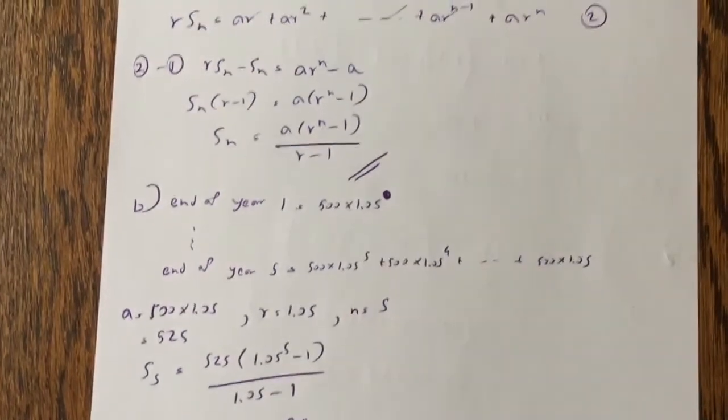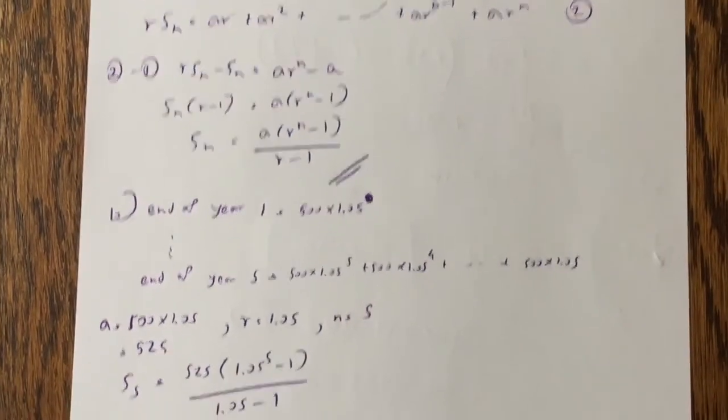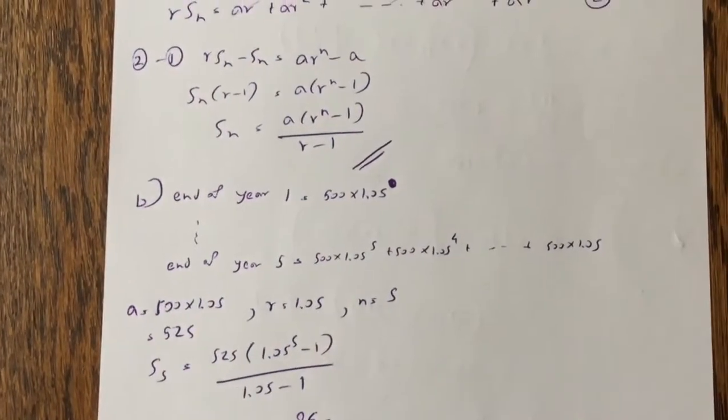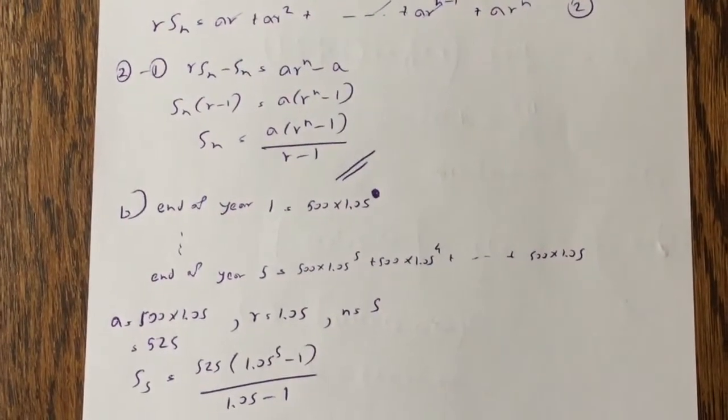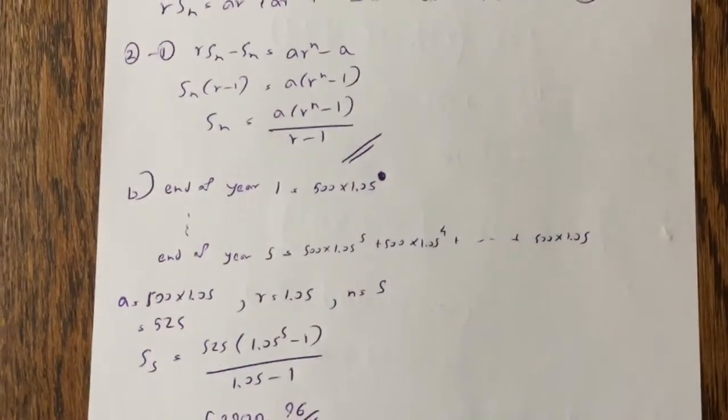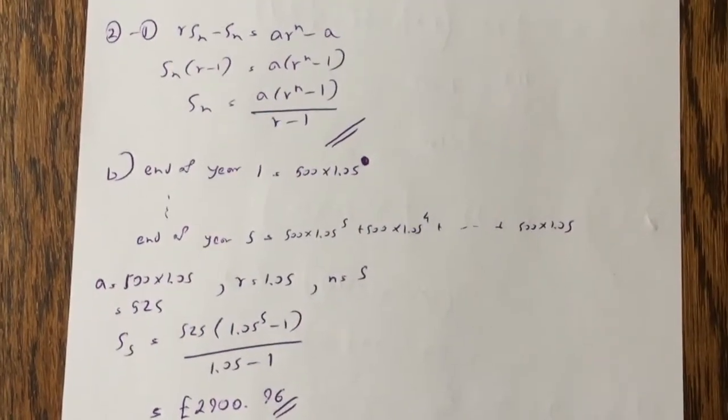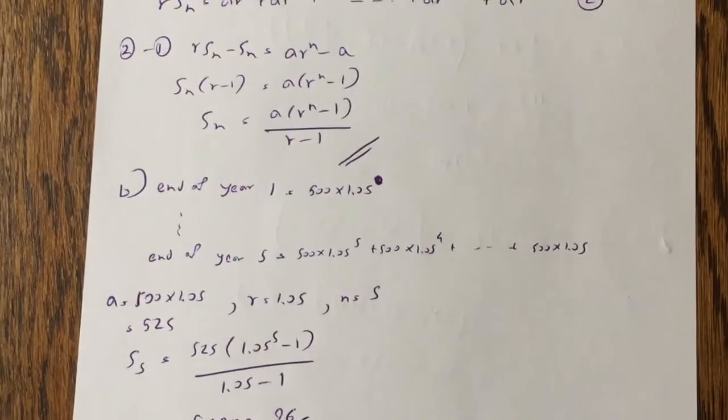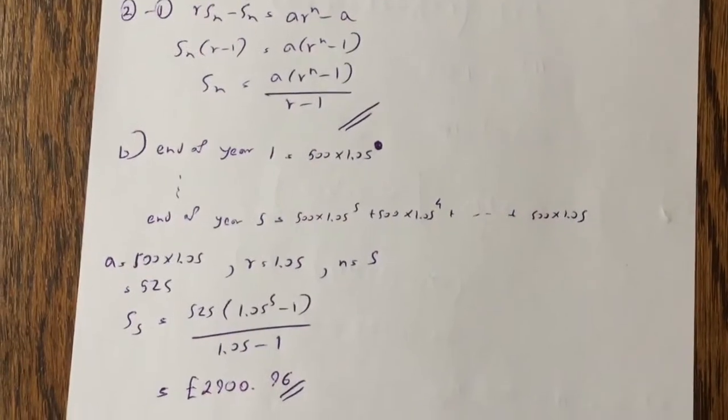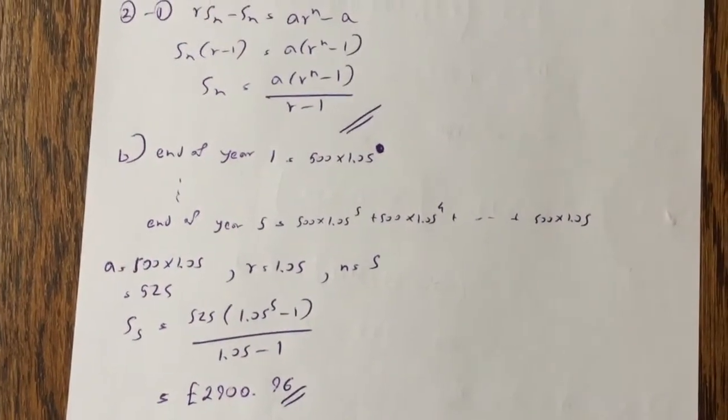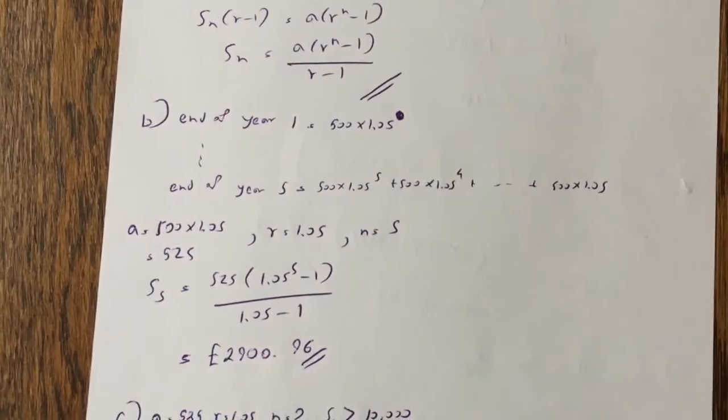Question B. So end of year 1, you would just have first month's investment, which is 500 times 1.05, but end of year 5, so you would have had first month's installment five months' interest, second month's installment four months' interest, etc, etc, and the last month's installment will be just one month's interest. So the first term becomes kind of the last installment because that only earned one month's interest, so it's 500 times 1.05 as the first term, and the common ratio is 1.05. The number of terms is 5, so S5 equals, using that equation, you get 2,996 pence.